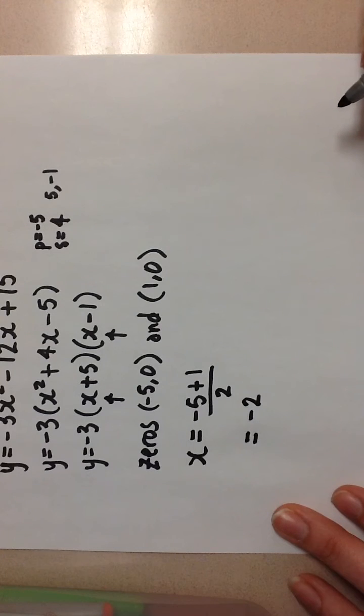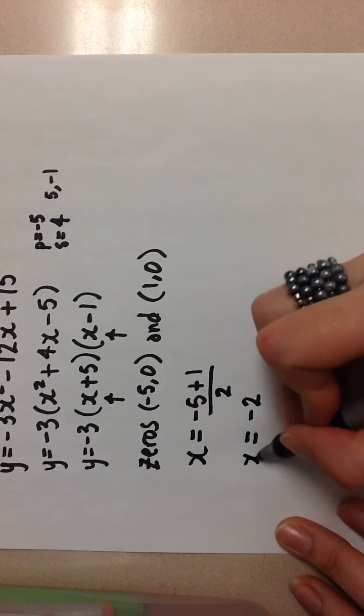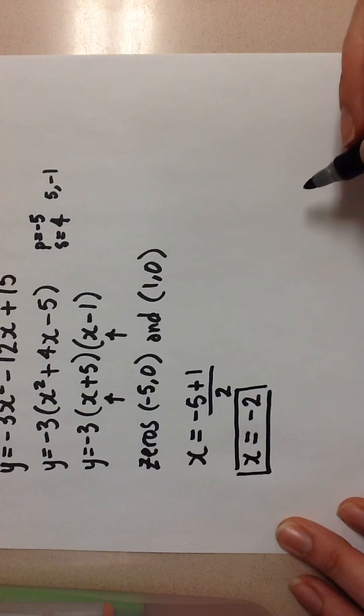My maximum or minimum value occurs where the axis of symmetry is. So I need to sub in this x equals negative 2 into the original equation to find out what my y value is.